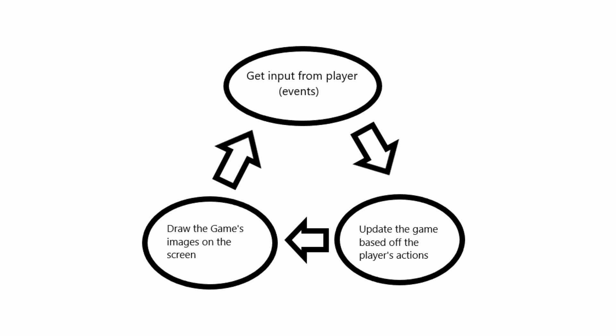This loop is going to go on forever until we tell it to stop. Every iteration of this whole cycle we're going to call a frame. If you've ever made a flipbook animation as a kid, the idea of a game isn't too far off — when you made that flipbook you drew all the pictures at once and flipped your notebook really fast to give the illusion of movement. Here, rather than drawing all pages at once, we draw one page, see what the player does, and draw the next page accordingly.